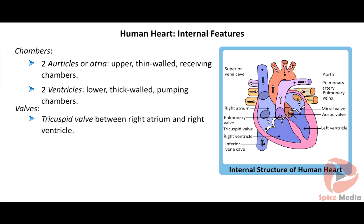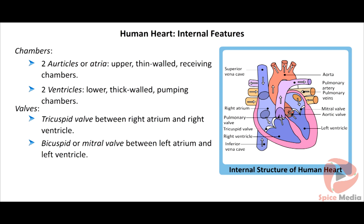The tricuspid valve is present between the right atrium and right ventricle. The bicuspid or mitral valve is present between the left atrium and left ventricle. Semilunar valves are present at the base of the aorta and pulmonary trunk.